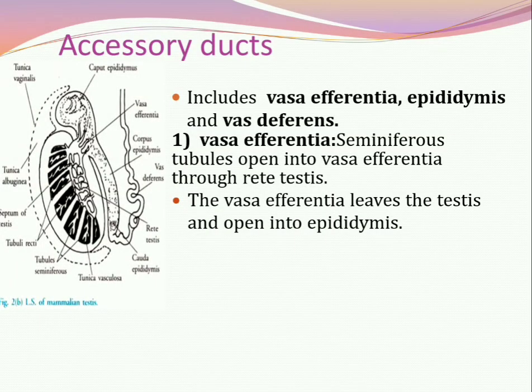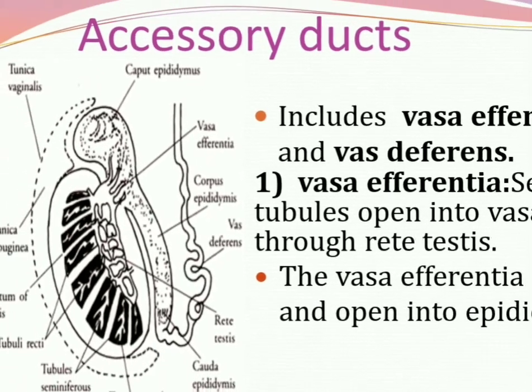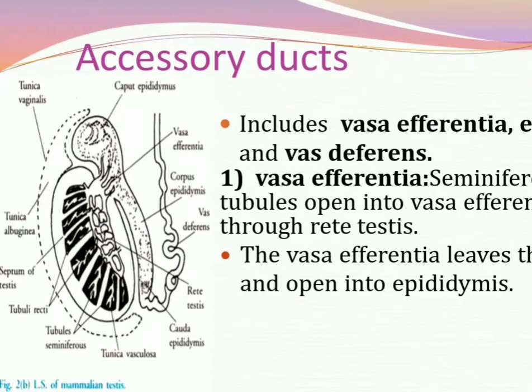The next topic is accessory ducts. In the male reproductive system there are three accessory ducts: vasa efferentia, epididymis, and vas deferens. The seminiferous tubules of the testes open into the vasa efferentia through the rete testis. The vasa efferentia then open into the epididymis.